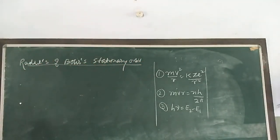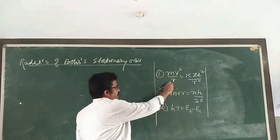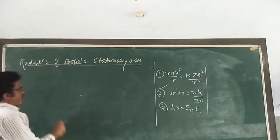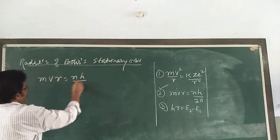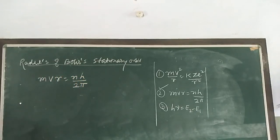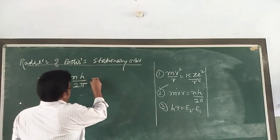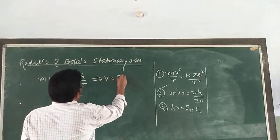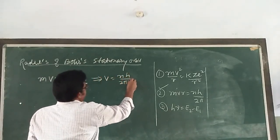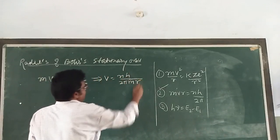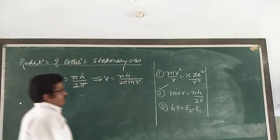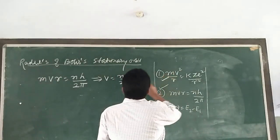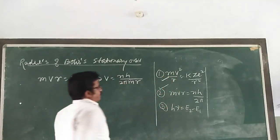So with the help of the second assumption, mvr = nh/2π, we can write the formula for v, that is v = nh/(2πmr). Using this, put this value of v into our basic equation number 1.